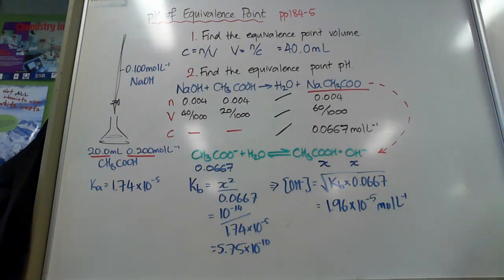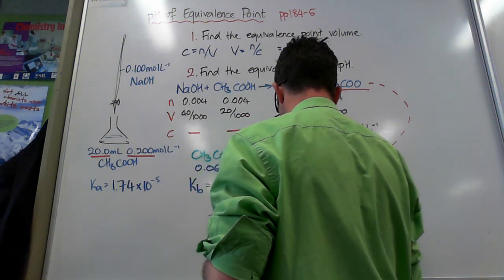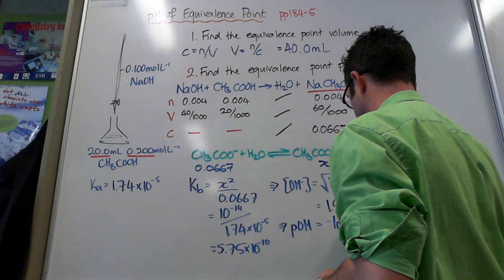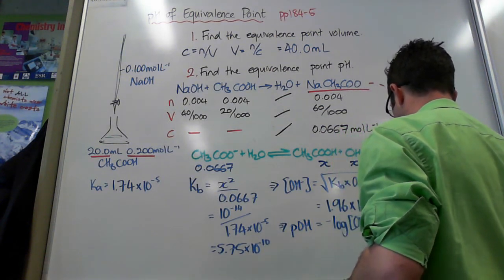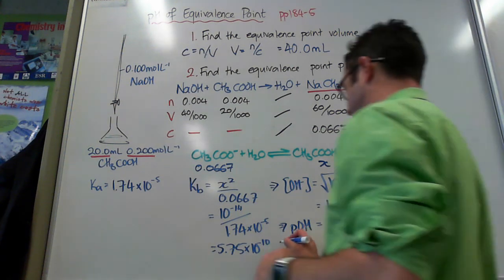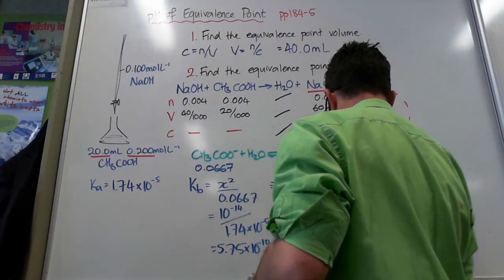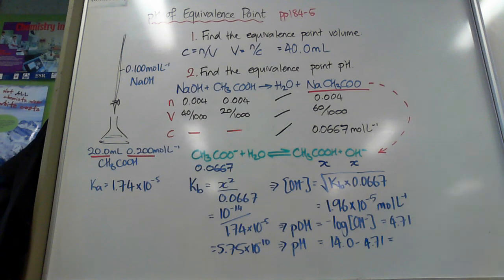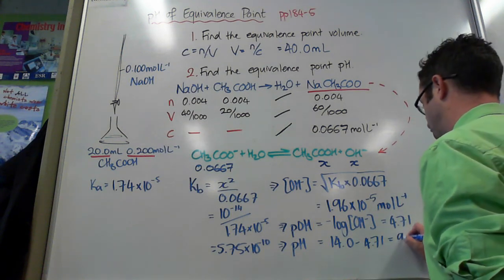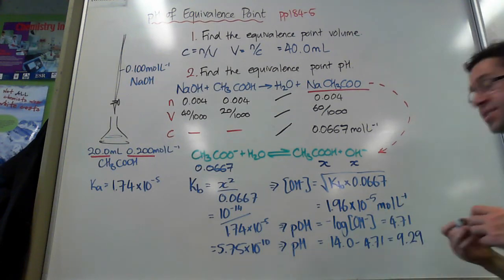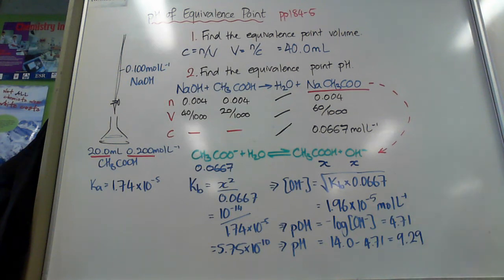Now there's two ways I can do this. I can find out my pOH, then go 14 minus that. Or I can find my hydronium ion concentration, and then do the pH from that. I personally prefer to do negative log of this for the pOH, and then go 14, so pkw, minus that. So negative log of that gives 4.71. So my pH is 14 minus 4.71, which equals 9.29.